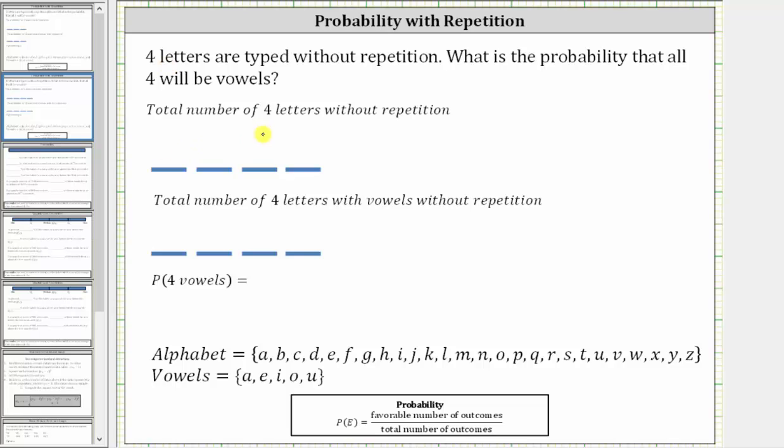Let's first determine the total number of ways four letters can be typed without repetition. Because there are 26 letters in the alphabet, there are 26 ways to type the first letter. Once the first letter is used, it cannot be used again, and therefore there are 25 ways to type the second letter.